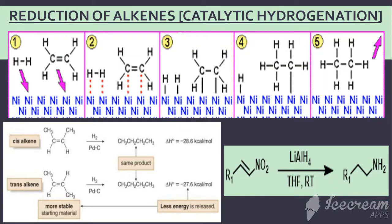Let us see the mechanism of catalytic hydrogenation. In step one, the hydrogen and the ethene molecule collide with the nickel catalyst surface. I am showing you the reaction of ethene with hydrogen in the presence of nickel. These catalysts may be platinum, palladium, or nickel. In step one, hydrogen and ethene molecules collide with the nickel catalyst surface.